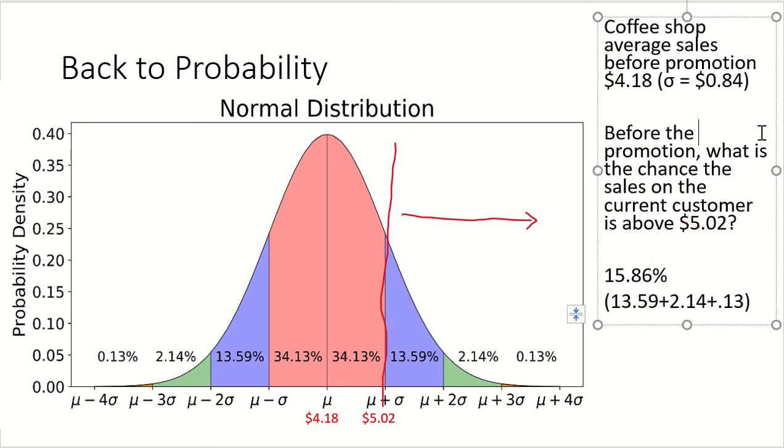Well, $5.02 is exactly one standard deviation above the mean. So this is one standard deviation above the mean. The chance that the sale is going to be more than $5.02 is $13.59 plus $2.14 plus $0.13. There's a 16% chance almost that just based on regular anybody walking in off the street that the next person is going to come in with a $5.02 value. If my average is $4.18 and my standard deviation is $0.84.